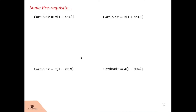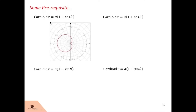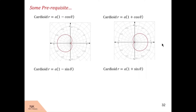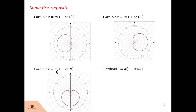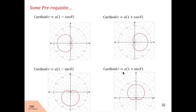Cardioid is basically an apple shape figure. Cardioid of the equation r equal to a into 1 minus cos theta is symmetric about x axis and points towards negative x axis. Cardioid of r equal to a into 1 plus cos theta is symmetric about x axis but points towards positive x axis. Cardioid of a into 1 minus sin theta is symmetric about y axis and points towards negative y, and r equal to a into 1 plus sin theta is symmetric about y axis and points towards positive y axis.